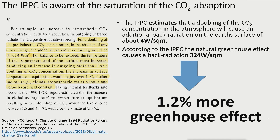The IPCC is aware of this problem, and therefore argues that the rotational bands above and below the 15 micrometer band provide an amplification of the greenhouse effect with a further increase in atmospheric CO2 concentration. Since the rotational bands only absorb very weakly, even the IPCC cannot construct a large greenhouse effect from these contributions. According to the IPCC, the natural greenhouse effect currently causes a back radiation from the atmosphere to the Earth's surface of about 324 watts per square meter, and a doubling of the current CO2 concentration would increase CO2-caused back radiation by about 4 watts per square meter — a 1.2% increase in the greenhouse effect.